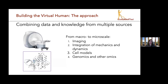The approach to building a virtual human is to take data and information from different sources at all scales. For example, if you're interested in building a digital heart, you would use an MRI or CT scan of the heart. You might use electrophysiological data like an EKG, integrate the mechanics and the dynamics to see what the organ does across a timescale. You can look at cell models, genomics, and other omics to see how the genome affects the resulting proteins. We use GROMACS substantially for this, and are really sister centers of excellence working together in this area.